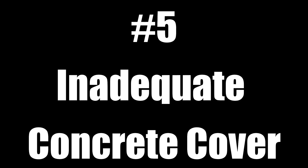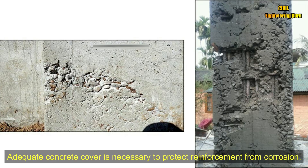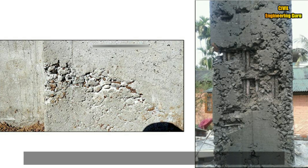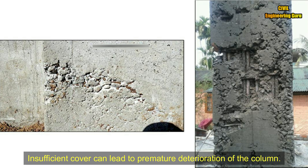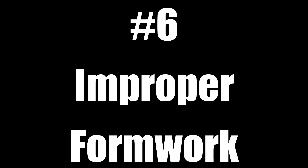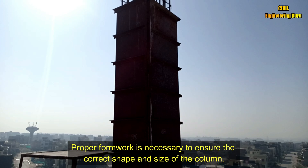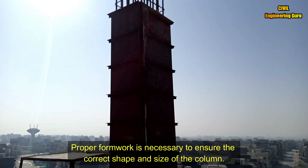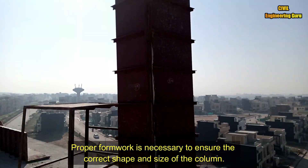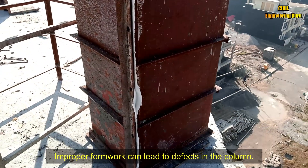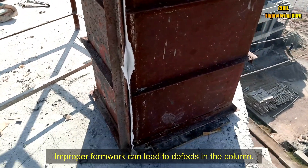Inadequate concrete cover: Adequate concrete cover is necessary to protect reinforcement from corrosion. Insufficient cover can lead to premature deterioration of the column. Improper formwork: Proper formwork is necessary to ensure the correct shape and size of the column. Improper formwork can lead to defects in the column.